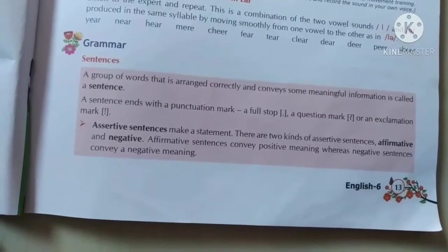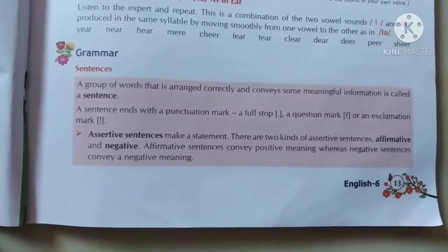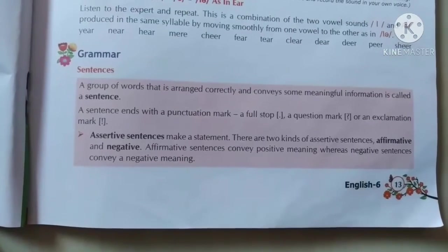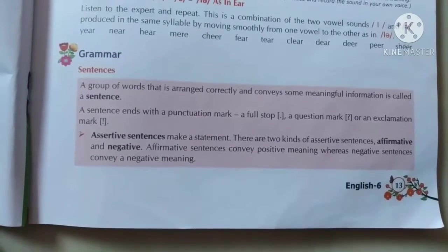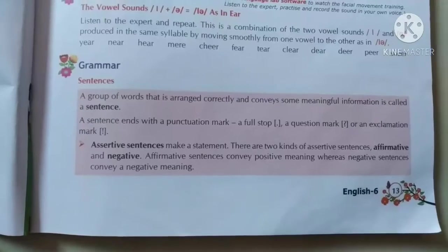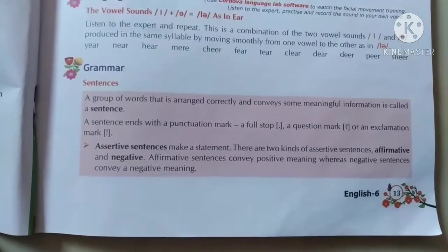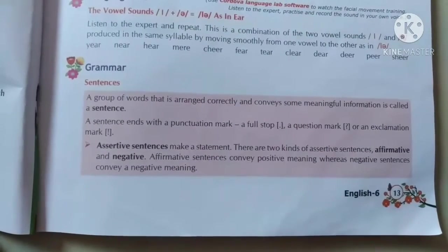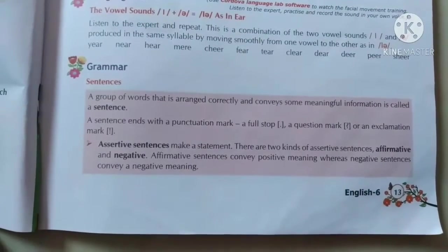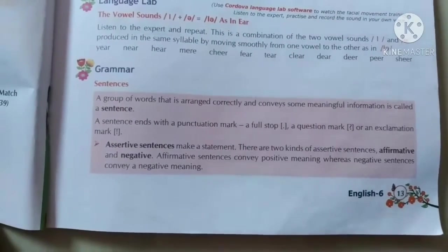Of kinds of sentences, there are four types of sentences: assertive sentence, interrogative sentence, imperative sentences, and exclamatory sentences. Sab se pehle, isme assertive sentence define kiya ga hai.